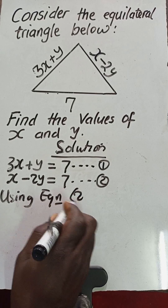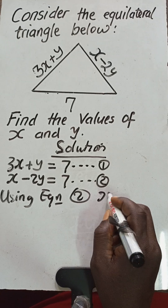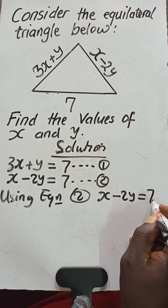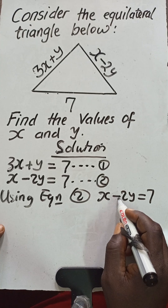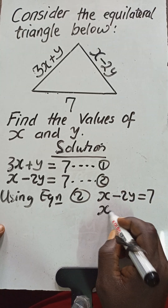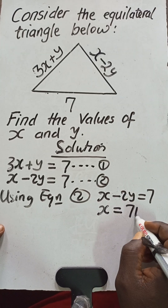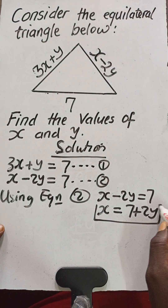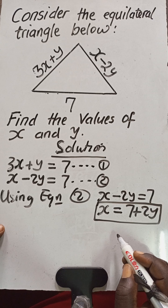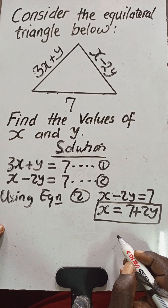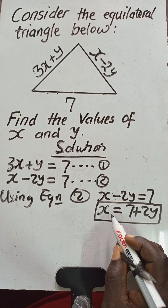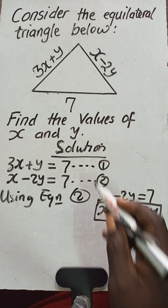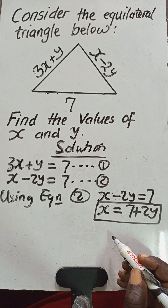Using Equation 2, which is x minus 2y equals 7: if we move negative 2y to the right-hand side, we end up with x is equal to 7 plus 2y. We'll put that in a box because this expression will help us find the value of x. Since we've used Equation 2, the substitution method says we now go back to Equation 1.